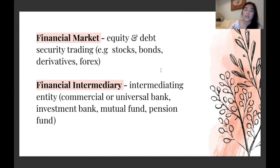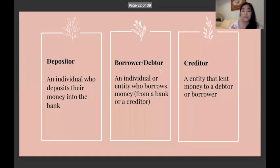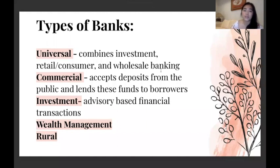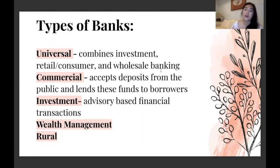Common terms: a depositor is the person who deposits their money into the bank; a borrower or debtor borrows money; and the creditor is the entity that lent the money. Types of banks include universal, combining investment, retail, consumer, and wholesale banking; commercial, the most common, which accepts deposits from the public and lends to borrowers; investment, which is advisory-based; wealth management for richer individuals to help manage their money — including philanthropy portfolios; and rural banks, which cater to people in the rural sector, giving them loans for fisheries or agricultural activities.